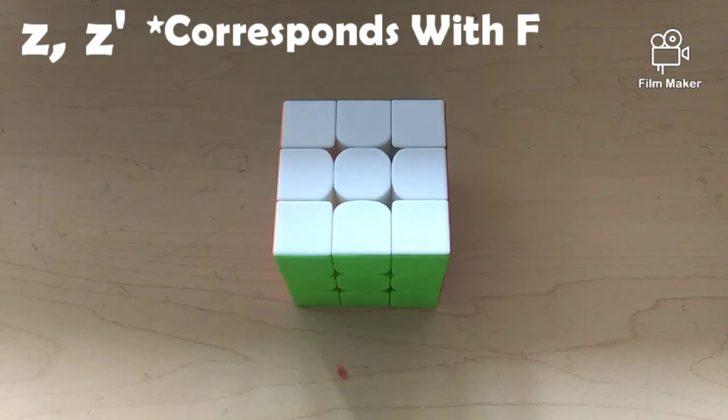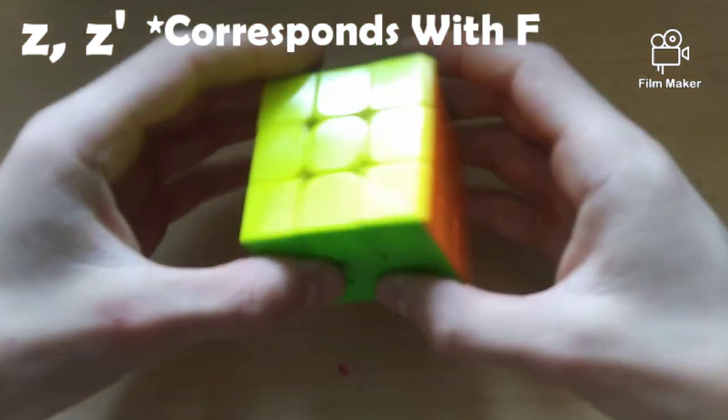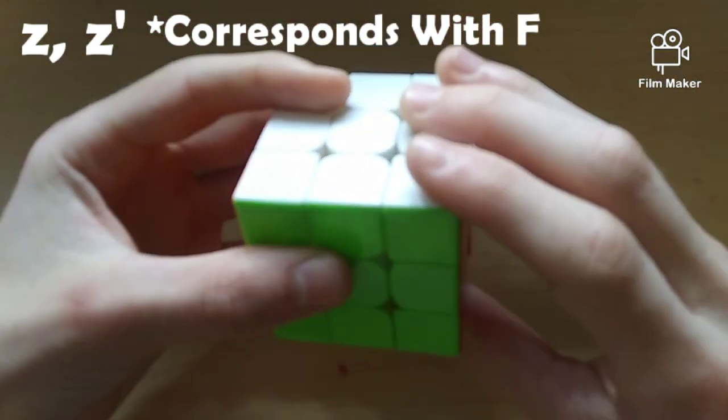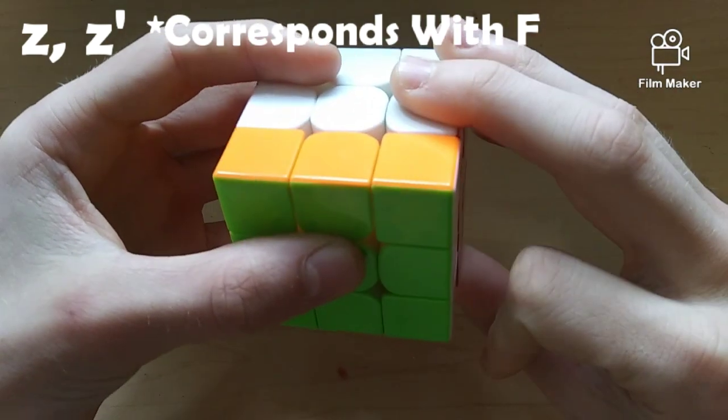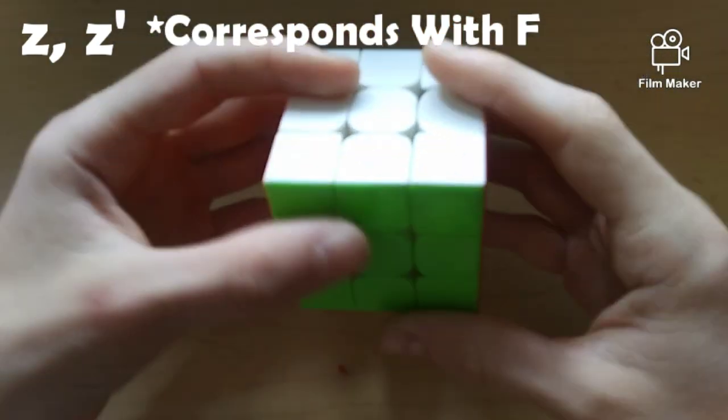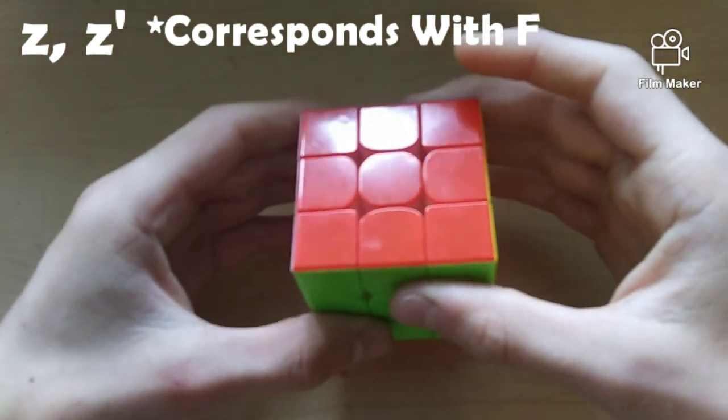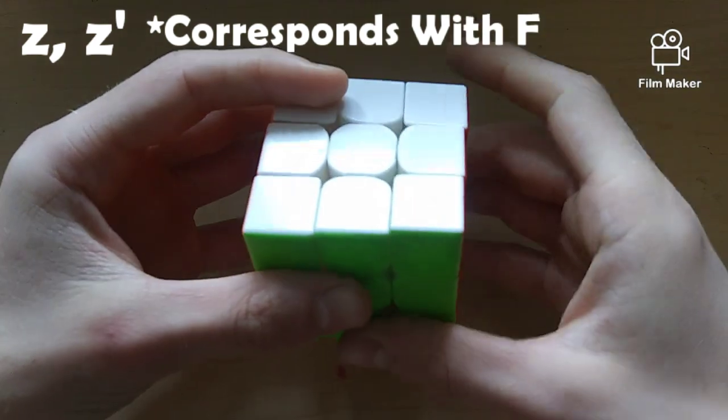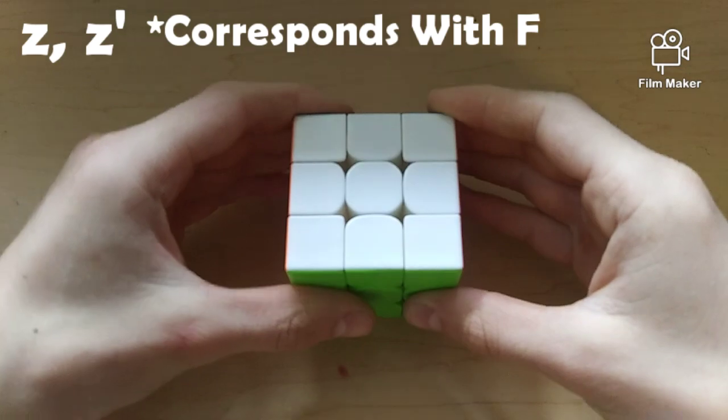And, finally, for the last cube rotation, and the last move you can do on a cube, this is the Z move, which rotates on this axis right here. Z corresponds with the F face, so if you wanted to do a Z, you would think of F, except you'd move the whole cube in that direction. If you wanted to do a Z', you'd think of F', except you'd move the whole cube in that direction. And, finally, if you wanted to do a Z2, think of F2, and it doesn't matter which way you turn it, because it'll end up at the same spot, but you'd move the Z rotated twice.